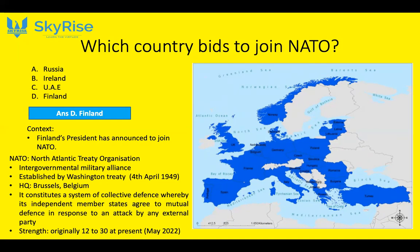Originally NATO had only 12 member countries; now it has 30. Slowly, NATO is expanding. Russia is very much against this expansion — that is why it attacked Ukraine, because Ukraine wanted to join NATO. Russia invaded Ukraine to prevent it from joining NATO.